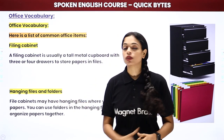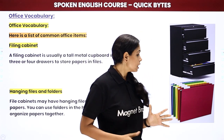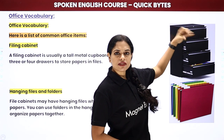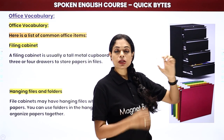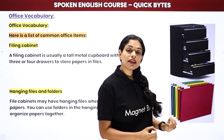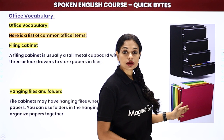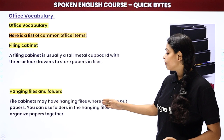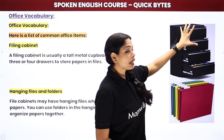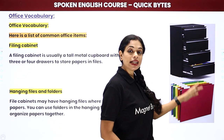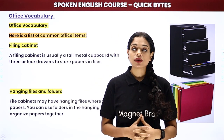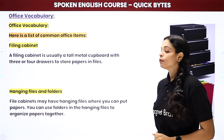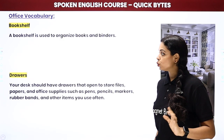Next we have hanging files and folders. These are open files and folders — individual, singular ones. File cabinets may have hanging files where you can put papers. Inside the hanging files, you store all your work documents. You can use folders in the hanging files to organize papers together. Basically they are used to organize papers.